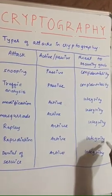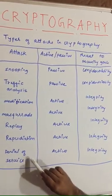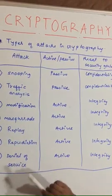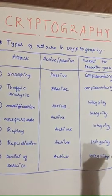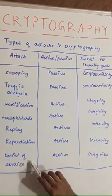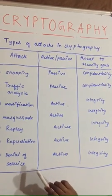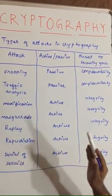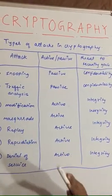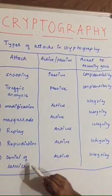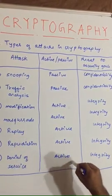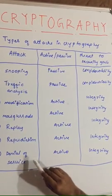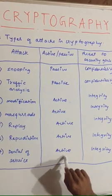The last attack is denial of service, famously known as DOS. It is also an active attack and a threat to integrity. In denial of service, the intruder keeps sending as many requests to the receiver's or sender's server that the server goes down and their service stops.